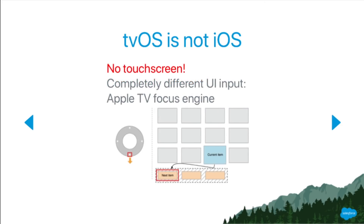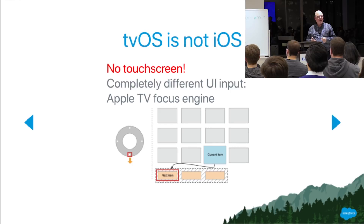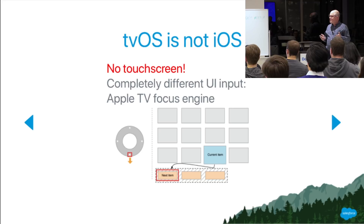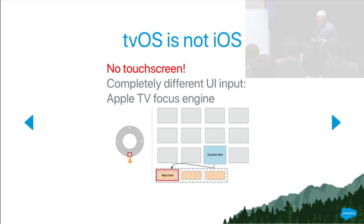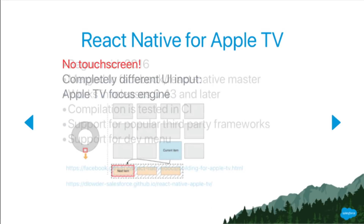React Native was designed for phones — designed for touchscreens — but tvOS doesn't have a touchscreen. What it has is called the focus engine. The focus engine is basically like tab or arrow key navigation on the desktop. What you have to do is detect when a UI element goes in and out of focus and respond to that correctly. We did manage to do that.